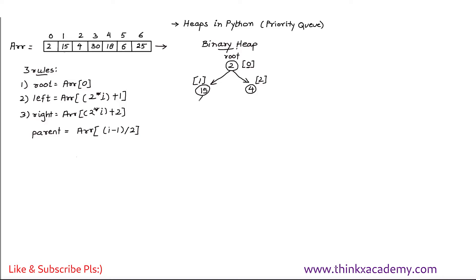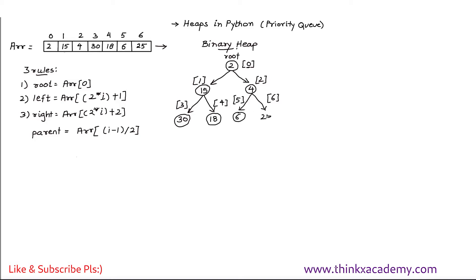We can see a simple pattern: positions go 0, 1, 2, then 3 and 4 for the next level, then 5 and 6. At position 3 we have 30, position 4 has 18, position 5 has 6, and position 6 has 25. This is the binary heap constructed from the array.